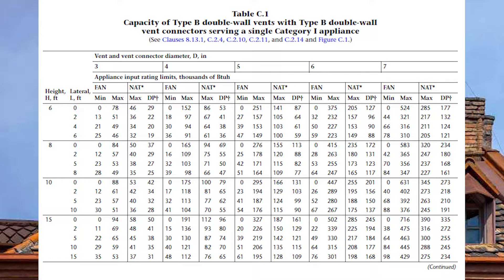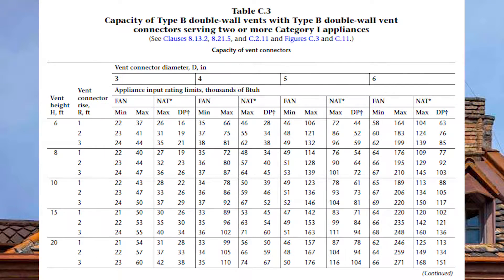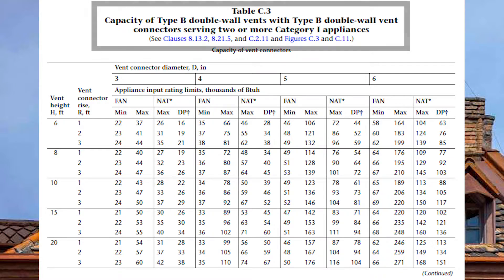Turn to page 192 in your gas code to table C3. The title of table C3 says: capacity of type B double wall vents with type B double wall vent connectors serving two or more category one appliances.